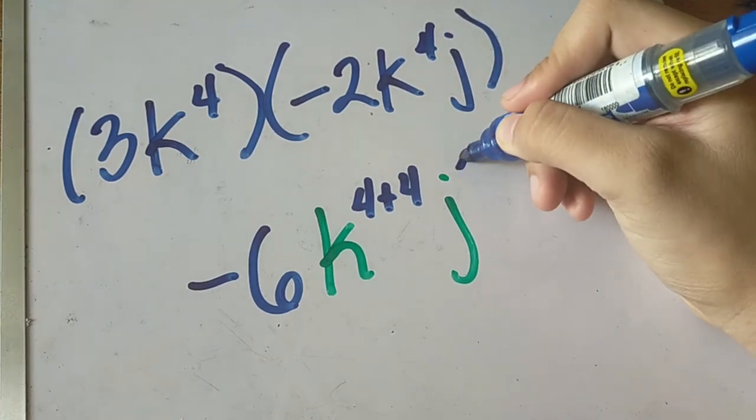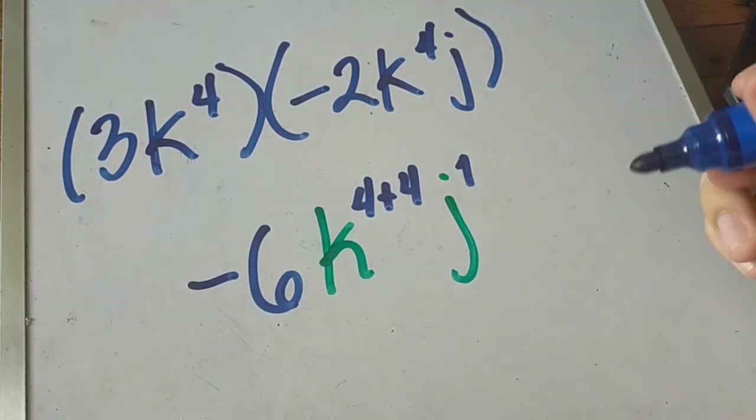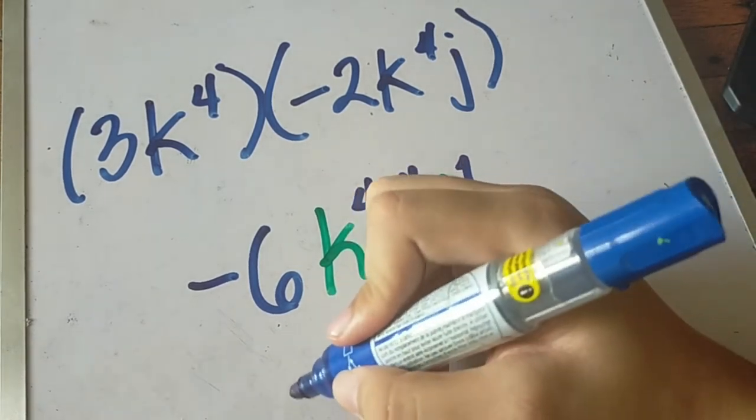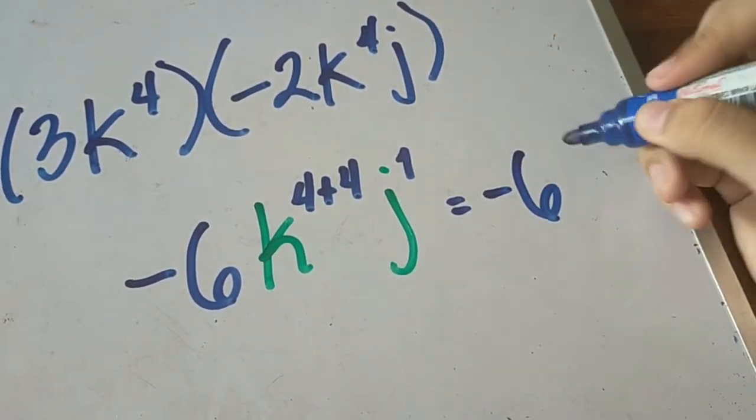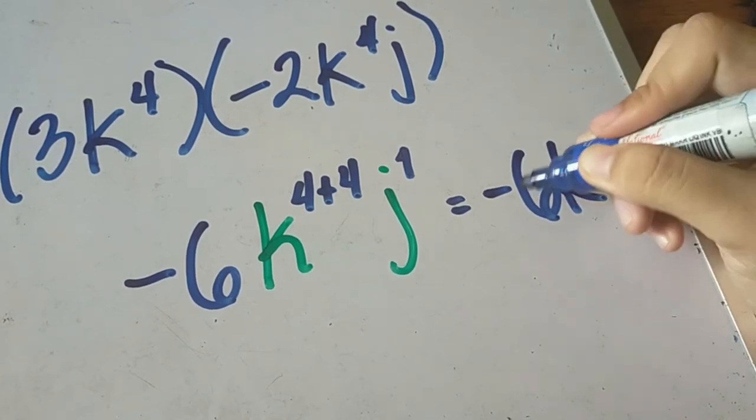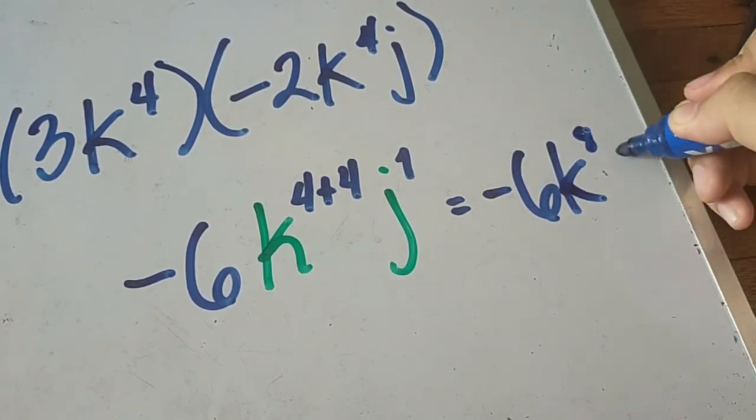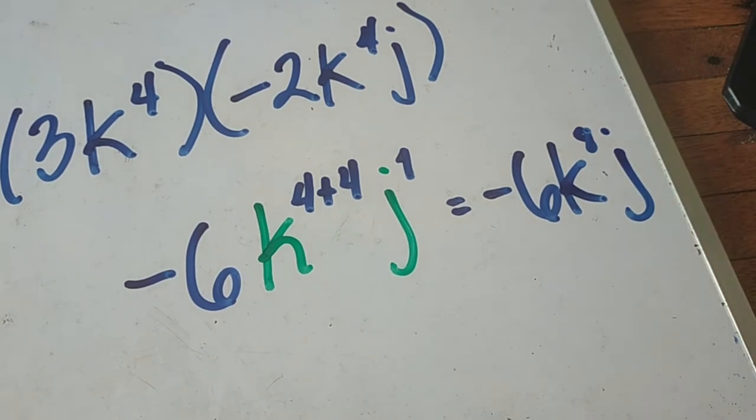Then we will now simplify. To simplify this we will have negative 6k raised to 8 and then j. Optional to put the 1, but I suggest or advise that you don't put the 1. And that's how you multiply or simplify using the product rule.